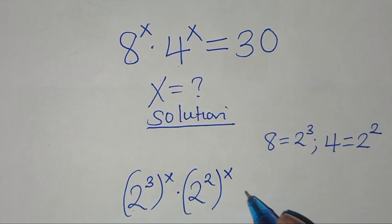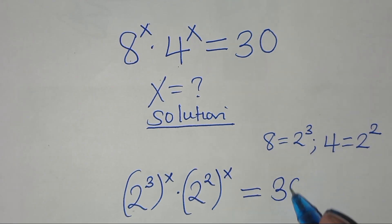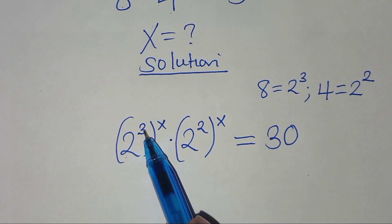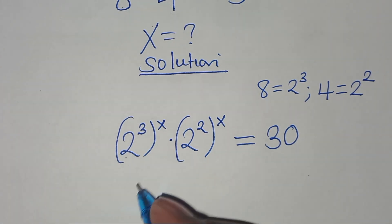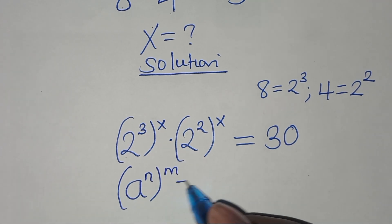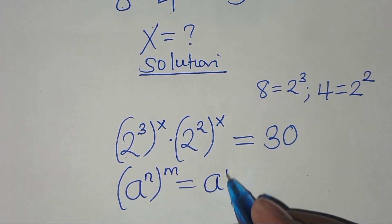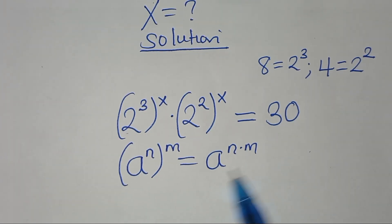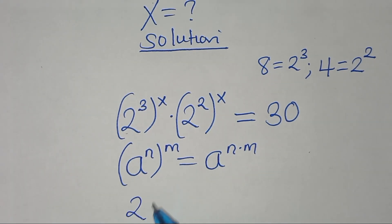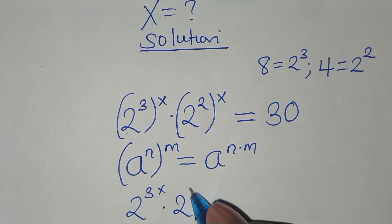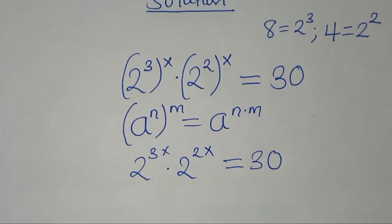This is equal to 30. The next step: 2 to the power 3 raised to the power x is in the form of a raised to the power n, raised to the power m, which we can express as a raised to the power n times m. Applying this identity, we get 2 to the power 3x times 2 to the power 2x.